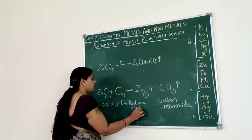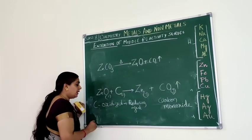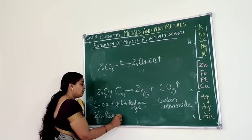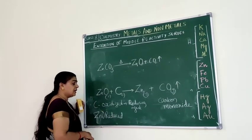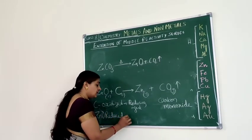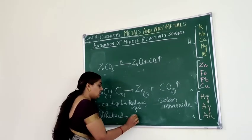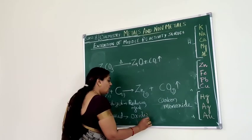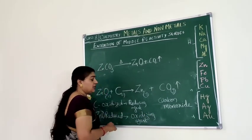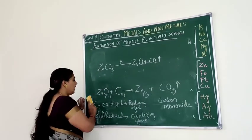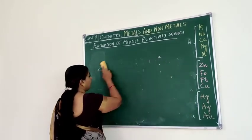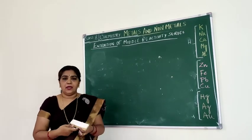Always remember: the one which is getting oxidised will be the reducing agent. Carbon gets oxidised — it gains oxygen — so carbon is the reducing agent. Zinc oxide is getting reduced because it is losing oxygen, so zinc oxide is the oxidising agent. This is how we get the metal from its sulphide ore as well as carbonate ore.